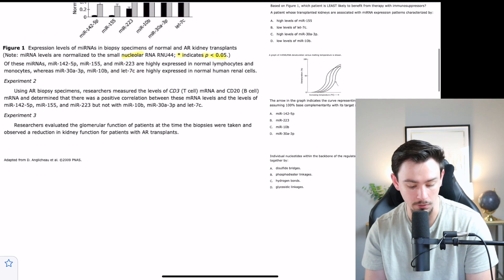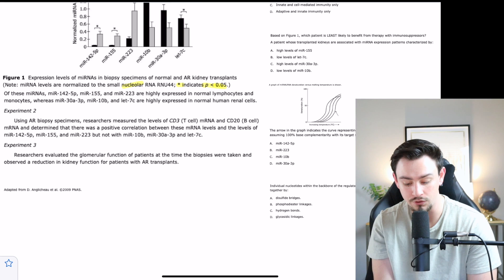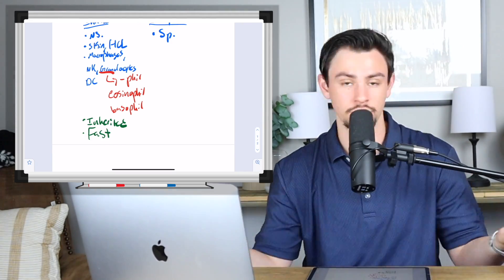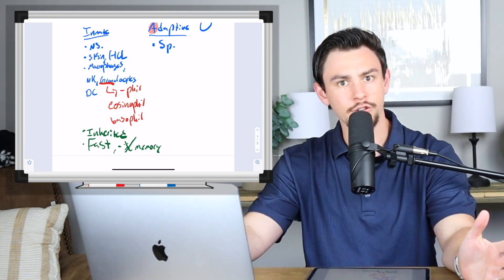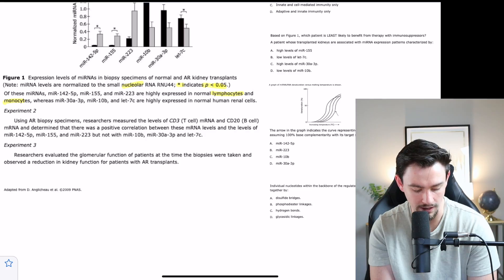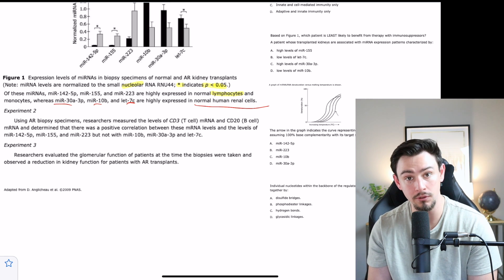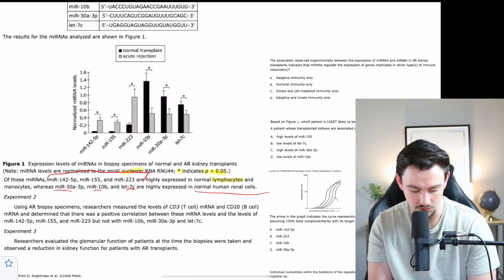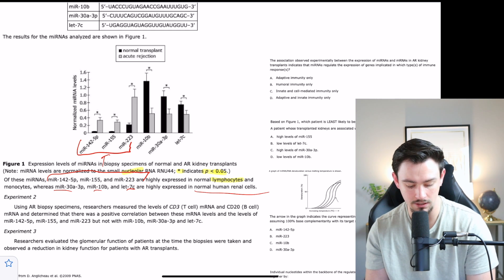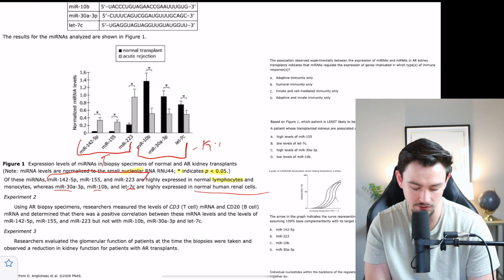Of these microRNAs, this one, this one, and this one are highly expressed in normal lymphocytes and monocytes. If you've watched the high yield video where I explained the immune system, then you know that lymphocytes are associated with the adaptive immune system. That is a high yield science. Whereas these three are highly expressed in normal human renal cells, not associated with the immune system, just a normal kidney cell. These first three are microRNAs associated with the immune system, whereas these three are just in kidneys, just normal cells.